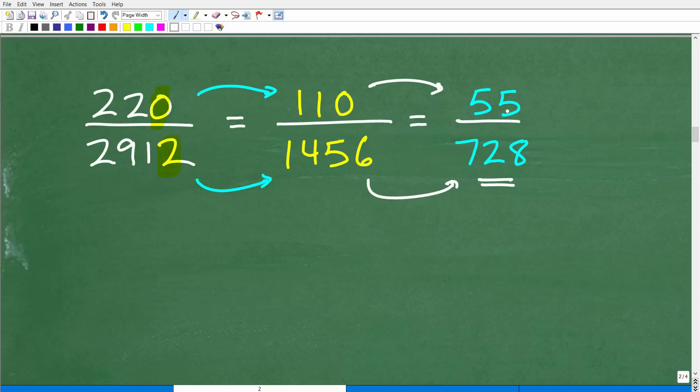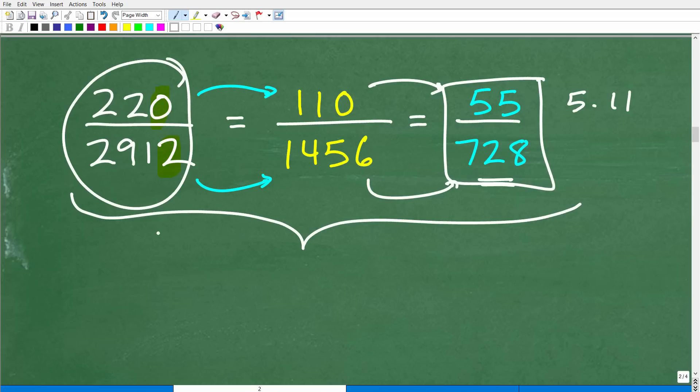Now you're saying to yourself, let me see if I can divide this by two again. And now if you know the divisibility rules, this is going to be really helpful as well. But I could take this 110 and say, I'm going to divide by two again, and I have that gives me 55. Then divide this by two, and I get 728. Look at that. There's our LCD. And now 55 is what? That's just five times 11. Those are prime numbers. And now is 728 divisible by five or 11? No.